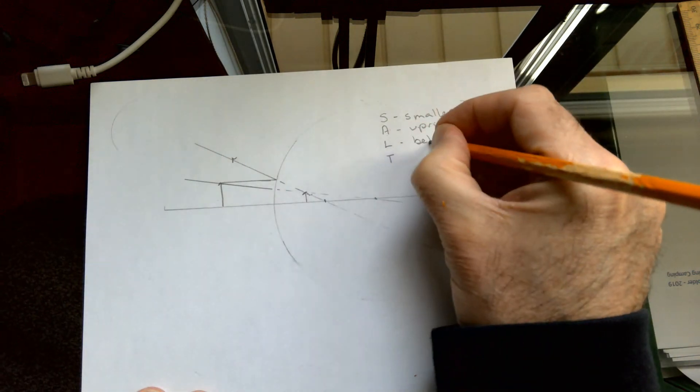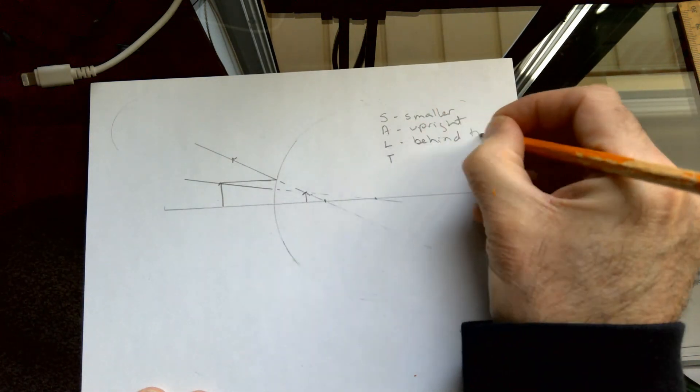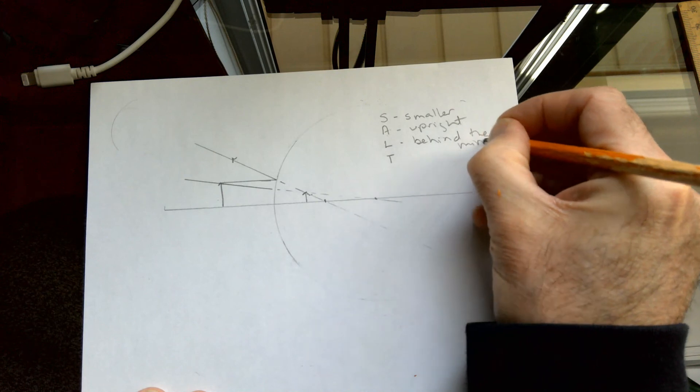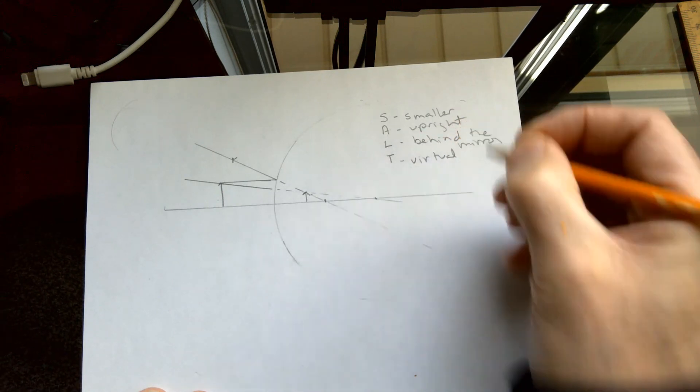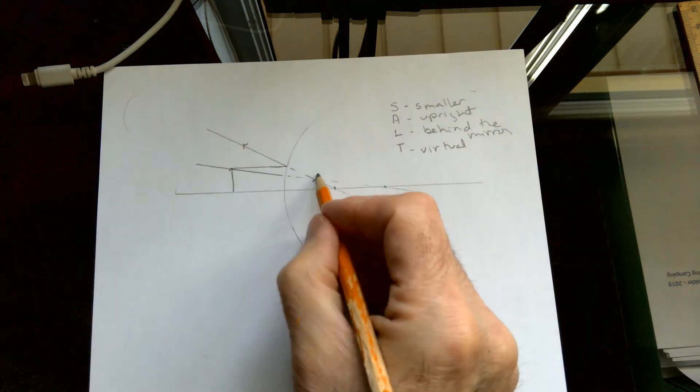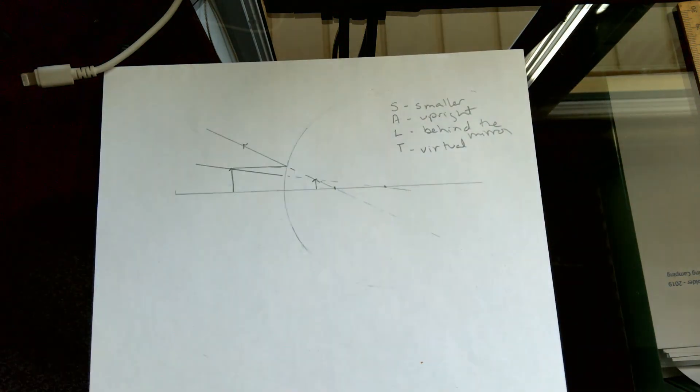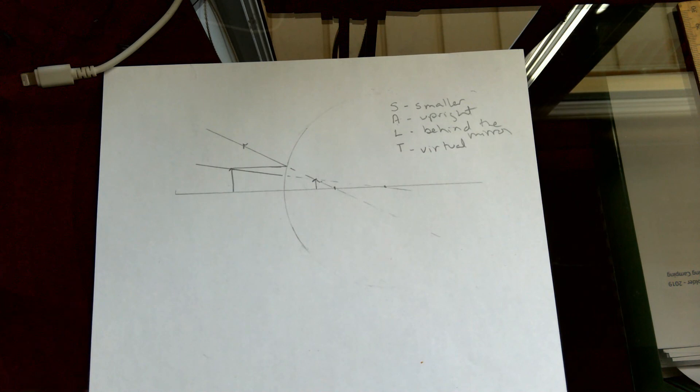Location. It's behind the mirror. Type. It is virtual. This is not a real image. It's made by artificial rays that extend back behind the mirror.